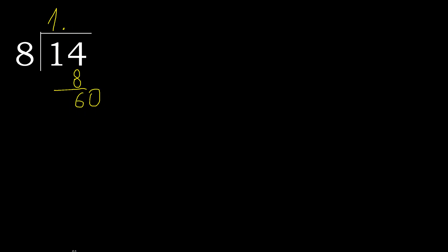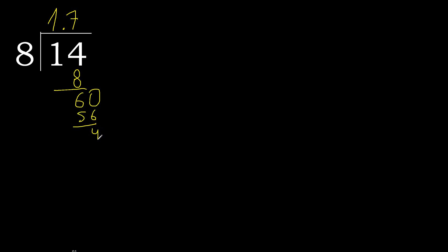8 multiplied by 8 is greater. 8 multiplied by 7 is 56 — that is not greater, subtract. Complete — always complete with 0. 0 point. 40.